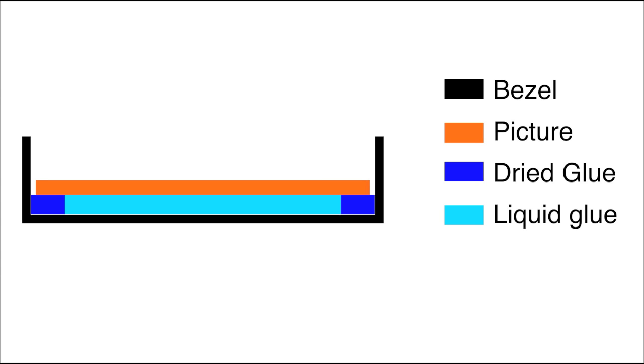As shown in this example, this is a cutaway image of our bezel, which is shown in black, with our picture or image shown in orange. Dried glue shown in the blue, and undried glue shown in light blue. As you can see here, when the glue dries around the edges, it creates an air block so that the glue in the middle will never dry.